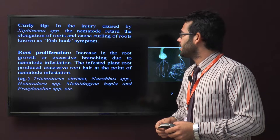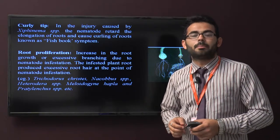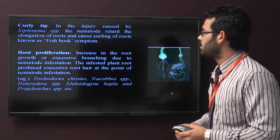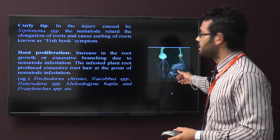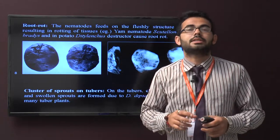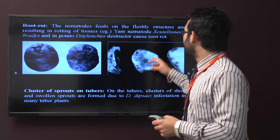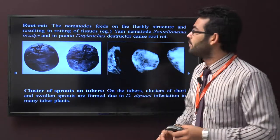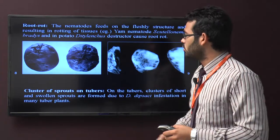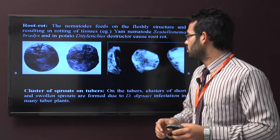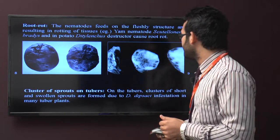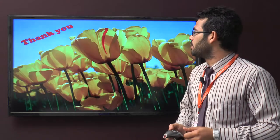Root proliferation is increased root growth or excessive branching due to nematode infection. Infected plants produce external roots at the point of nematode infection. Root rot occurs when nematodes feed on fleshy structures resulting in rotting of tissue, like in yam. Scutellonema bradys in potato and Ditylenchus destructor cause root rot. Cluster of sprouts on tuber crops: clusters of short and swollen sprouts are formed due to Ditylenchus destructor infection in many tuber plants.